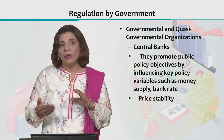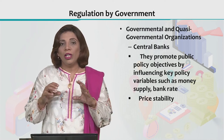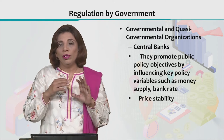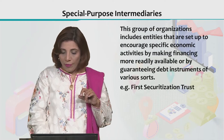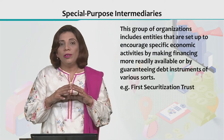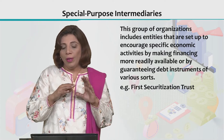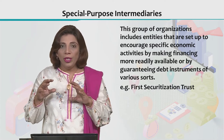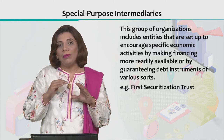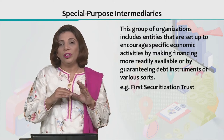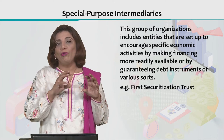Central bank is a semi-autonomous institution whose major purpose is to regulate the economy through the financial system of that particular economy. Then, government kaisa regulate kar raha hai — other than the central bank, we have special purpose intermediaries. These are companies that establish kiye jaate hain hakumat ki taraf se, kisi specific task ko perform karne ke liye.